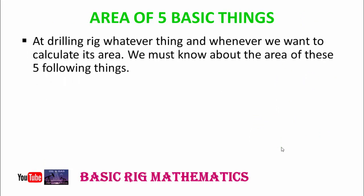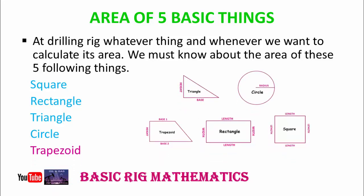At oil and gas drilling rigs, whatever thing and whenever we want to calculate its area, we must know about the area of these five following things: first is the square, second is rectangle, third is triangle, fourth is circle, and fifth is trapezoid. As you see in the picture, this is a square, this is the rectangle, this is a triangle, here's the circle, and here's the trapezoid.